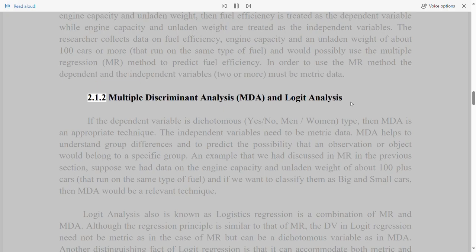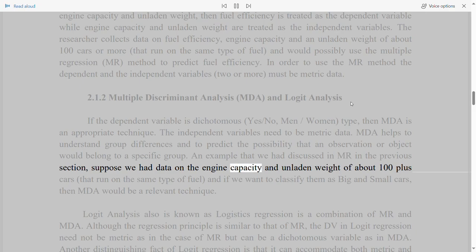2.1.2 Multiple discriminant analysis, MDA and logit analysis. If the dependent variable is dichotomous - yes-no, men-women - then MDA is an appropriate technique. The independent variables need to be metric data. MDA helps to understand group differences and to predict the possibility that an observation or object would belong to a specific group. An example that we had discussed in MR in the previous section: Suppose we had data on the engine capacity and unladen weight of about 100 plus cars that run on the same type of fuel. And if we want to classify them as big and small cars, then MDA would be a relevant technique.